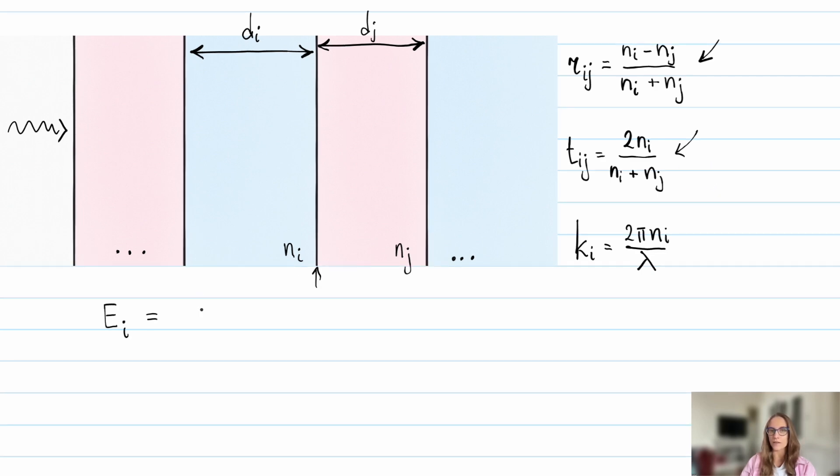Now, let's write down the electric field in arbitrary region i. We split it into two parts, one propagating to the right and one to the left.